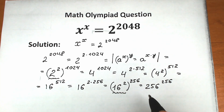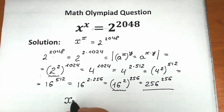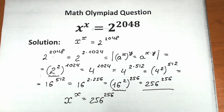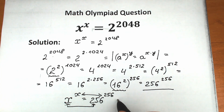We've maintained equal signs throughout, so this is absolutely the same thing as 2 to the power 2048. That means x to the power x equals 256 to the power 256. Same base, same exponent on both sides — the one and only way this equation has a solution is when base equals base and exponent equals exponent. Therefore, x equals 256.